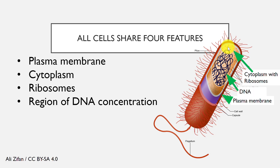And then all cells have a region of DNA — genetic material. In prokaryotic organisms, their DNA is just floating in what we call a nucleoid region. In eukaryotic cells, it can be contained inside of a nucleus, but regardless, they all have DNA.